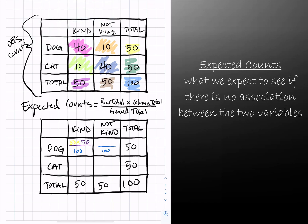For the dog that's kind to strangers, we would have 50 from the yellow and then 50 from the purple, the column total respectively, and then we're dividing that by the 100 which is the grand total.